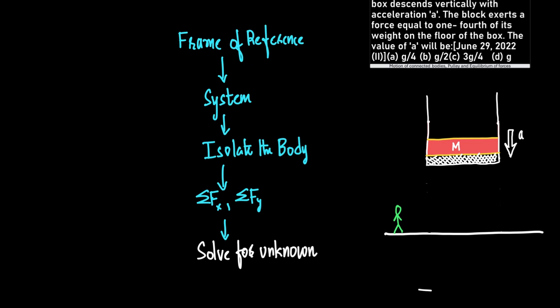Many of you have been asking about how to keep a flow chart in mind while solving questions on laws of motion. There exists no specific flow for one individual question. However, if you want to understand the whole concept of mechanics, specifically for this chapter: first choose your frame of reference, then identify the system of forces or bodies, then isolate the body you want to study, then apply sigma Fx and sigma Fy — finding which equals zero or which equals M times A — and then solve for the unknown.